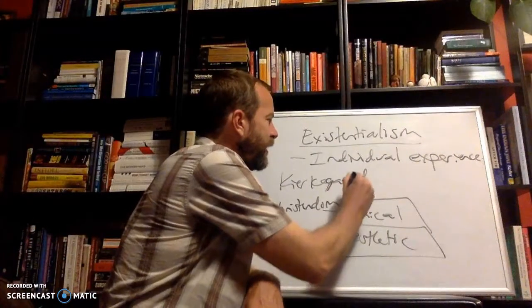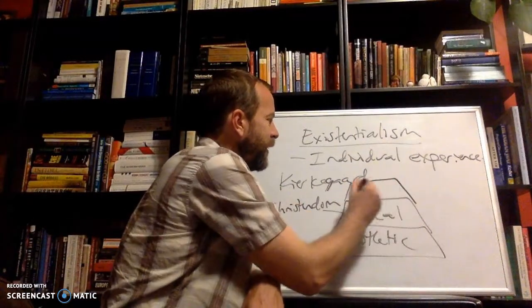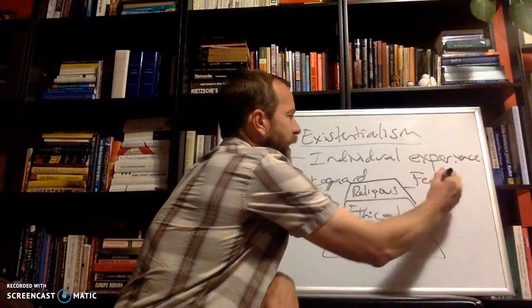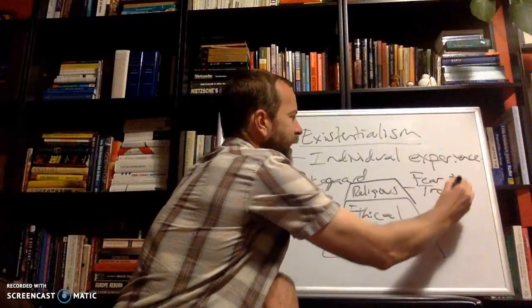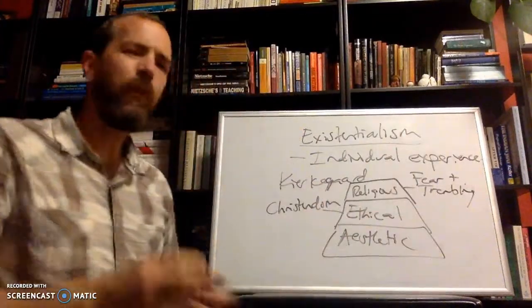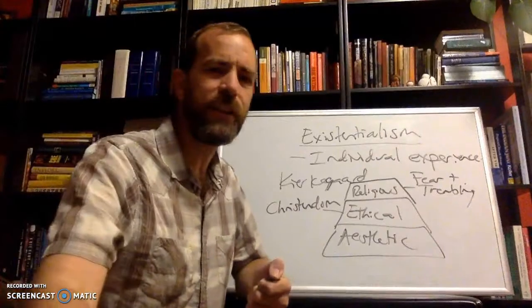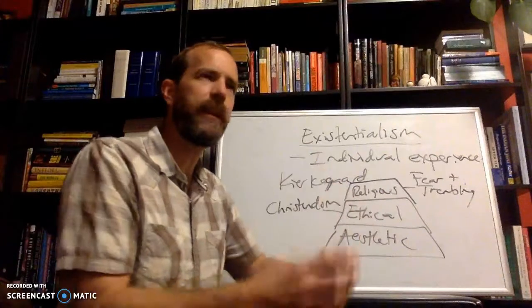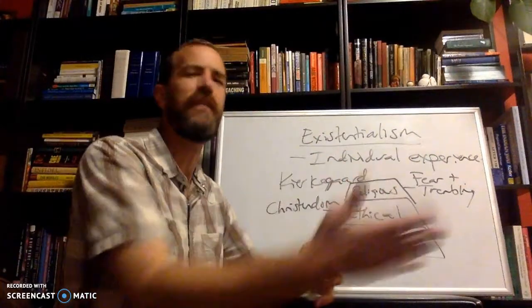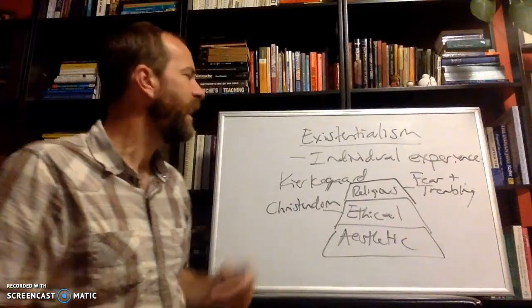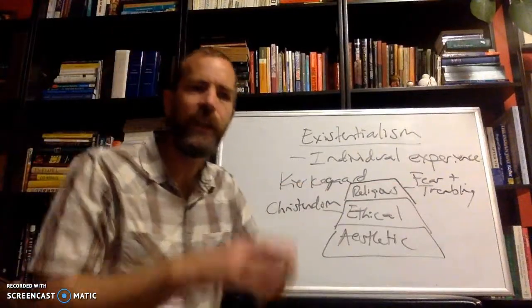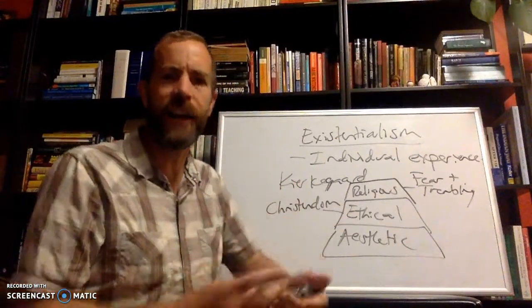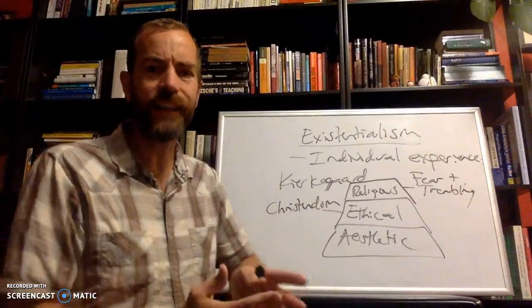And then for Kierkegaard, the top layer here is the religious. It's a realm of fear and trembling. When someone is in the religious realm, they can't make sense of their experience. They can't help make sense of it to someone else because it's so personal. So he uses as his example Abraham, because in the Old Testament, Abraham is asked by God to sacrifice his son, Isaac.